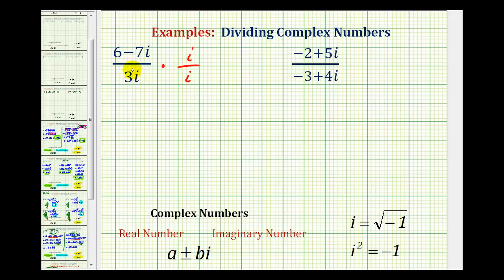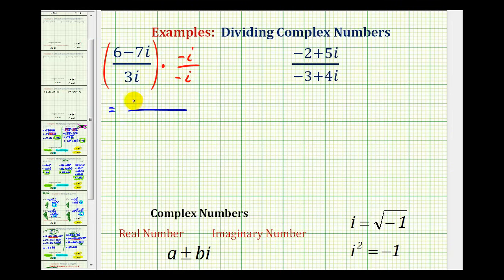But we do prefer the denominator to be positive, so instead of multiplying by i over i, we're actually going to multiply by negative i over negative i. Now we'll go ahead and multiply. In the numerator, we'll have negative six i, and then we'll have plus seven i squared.